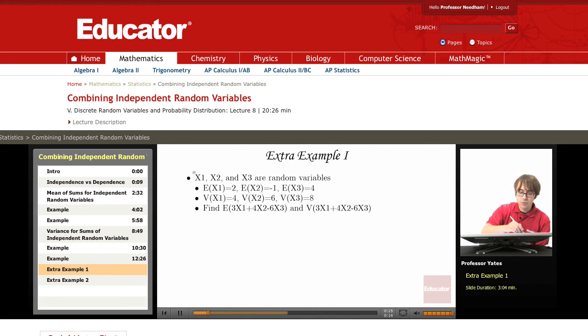In the following situation, I have three random variables, x1, x2, and x3. Their means are 2, negative 1, and 4, and the variances are 4, 6, and 8, respectively. What I want to find are the mean and variance of this combination.